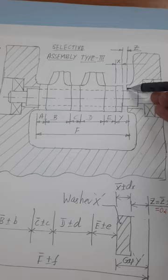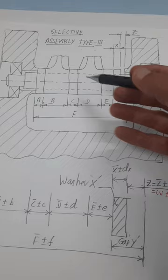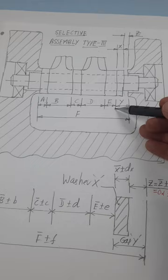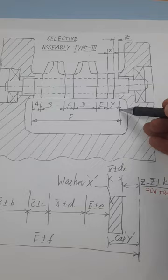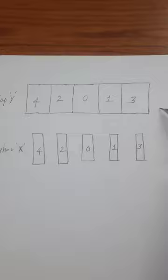This is the principle of the third type of selective assembly. This gap Y is not going to be constant for all the assemblies — in the first assembly the gap Y may be of some value, in the second assembly the gap Y may be a different value. So this gap Y varies from assembly to assembly. Gap Y is going to be grouped under 5 or more required number of groups.